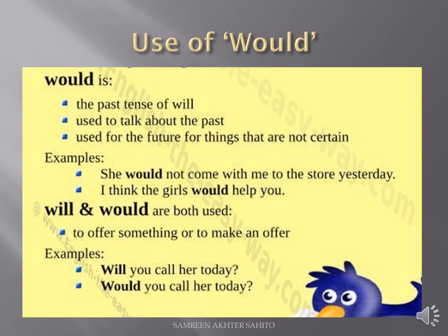Use of 'would.' Would is used as the past tense of will. In indirect narration, 'will' changes to 'would.' It is used to talk about past actions and also for the future when things are not certain.